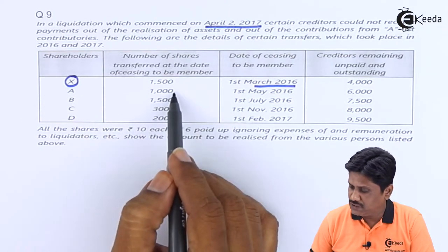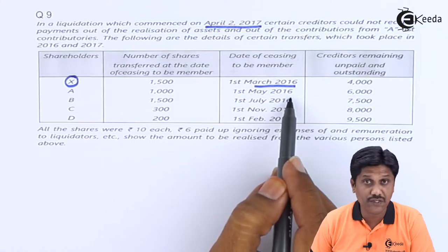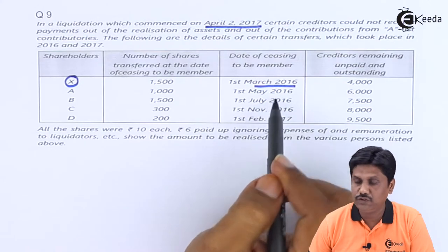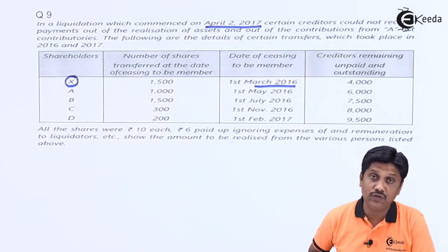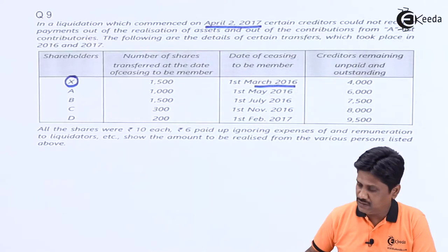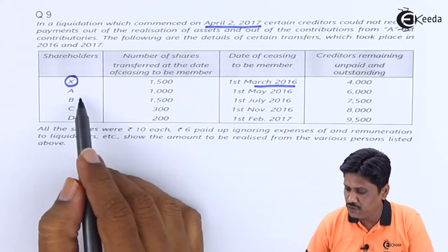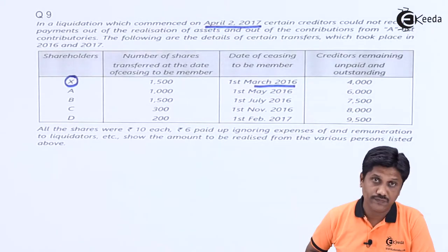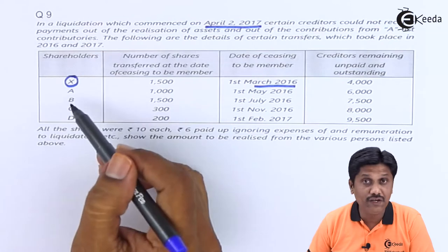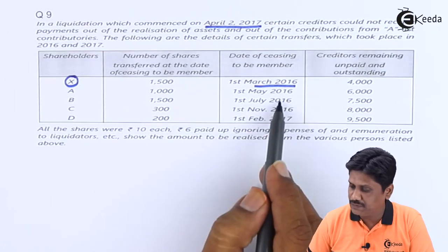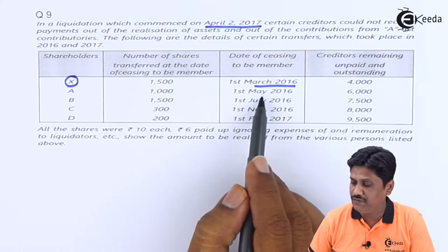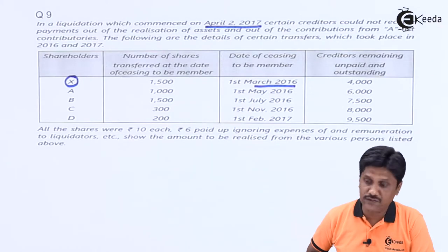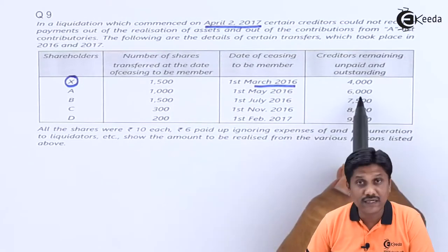A transferred 1,000 shares on 1st May 2016. Is that within our limit? Yes — shares must have been transferred between 3rd April 2016 and 2nd April 2017, so A is covered and is a List B contributory. A will bear only that liability which was outstanding on 1st May 2016, the date of transfer. The outstanding creditor amount on that date was Rs. 6,000.